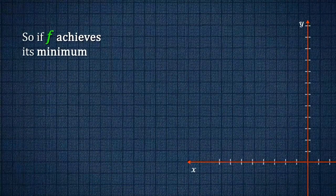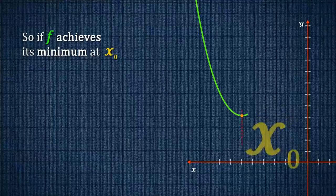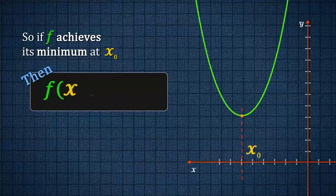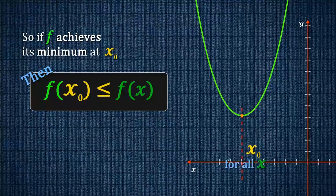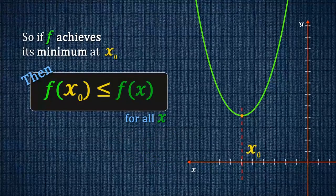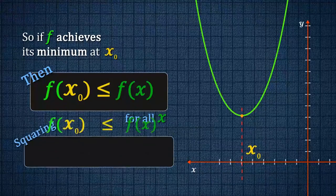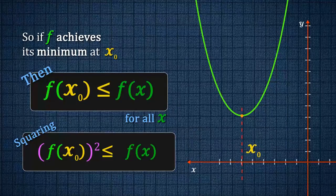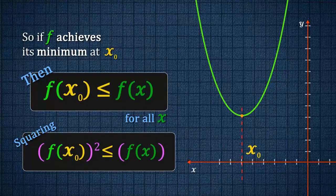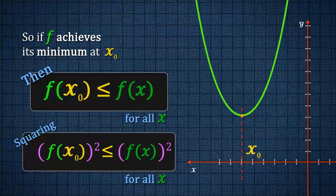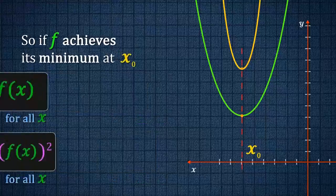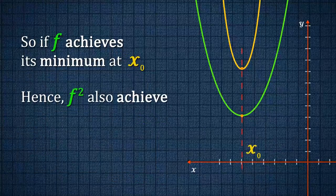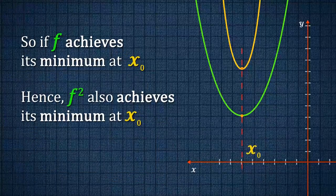So if f achieves its minimum at x0, then f of x0 is less than or equal to f of x for all x. Squaring, f of x0 squared is less than or equal to f of x squared for all x. Hence, f squared also achieves its minimum at x0.